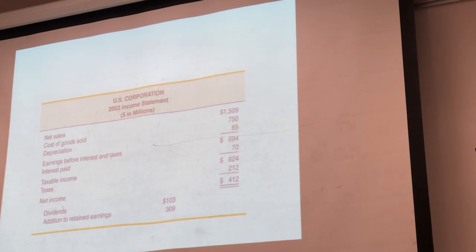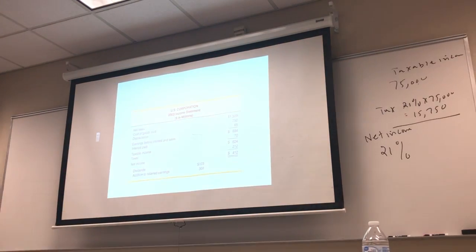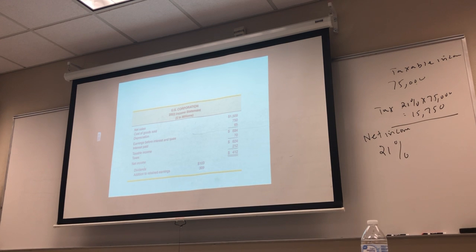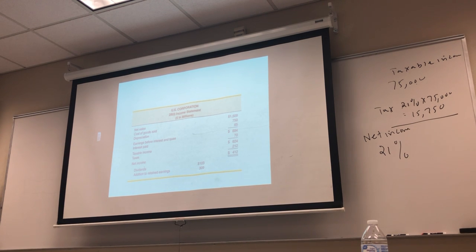This is your net income, net profit — taxable income minus the tax. This is the new tax system. Unless Congress changes it again, this is what we have. So once we multiply 21% by $75,000, we get that answer and subtract it from $75,000 to get your net income. So what about personal tax rates?